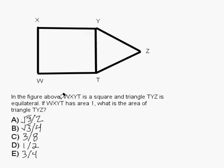In the figure above, WXYT is a square, and triangle TYZ is equilateral. If WXYT has an area of 1, what is the area of triangle TYZ? If you'd like to try this question on your own, press pause now.